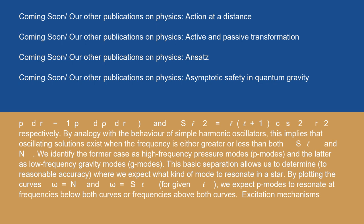We identify the former case as high-frequency pressure modes (p modes) and the latter as low-frequency gravity modes (g modes). This basic separation allows us to determine to reasonable accuracy where we expect what kind of mode to resonate in a star, by plotting the curves ω = N and ω = S_ℓ for given ℓ. We expect p modes to resonate at frequencies above both curves, and g modes at frequencies below both curves.